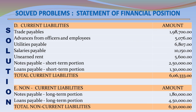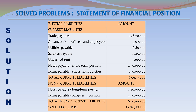Current Liabilities: Trade Payable – 198,700; Advances from Officers and Employees – 5,076; Utilities Payable – 6,807; Salaries Payable – 10,150; Unearned Rent – 5,600; Notes Payable Short-Term Portion – 250,000; Loans Payable Short-Term Portion – 130,000. Total Current Liabilities – 606,333. Non-Current Liabilities: Notes Payable Long-Term Portion – 180,000; Loans Payable Long-Term Portion – 450,000. Total Non-Current Liabilities – 630,000.